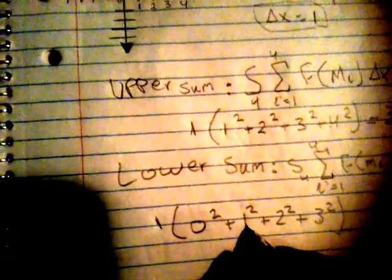Okay, 0² + 1² + 2² + 3². 3 times 3 is 9, 2 times 2 is 4, 1 times 1 is 1, and 0 is still 0. So 9 + 4 + 1 is 14. 14 times 1 equals 14.